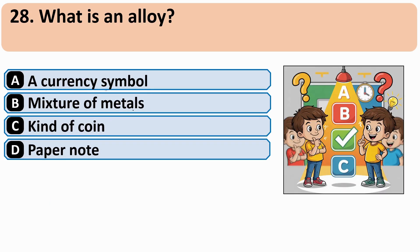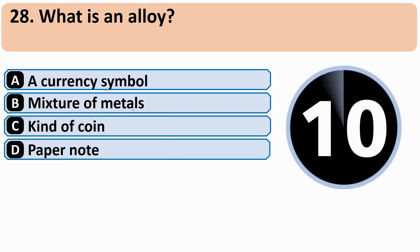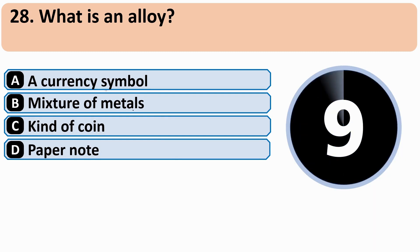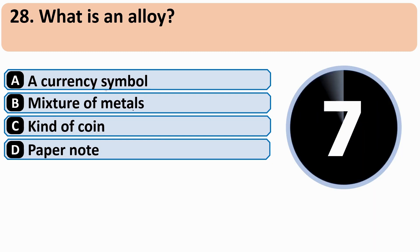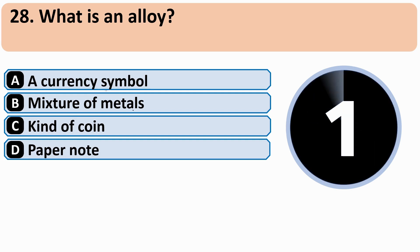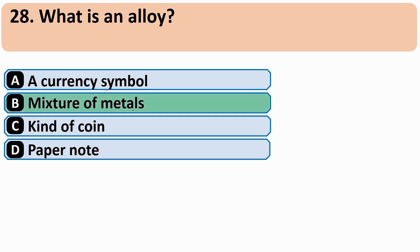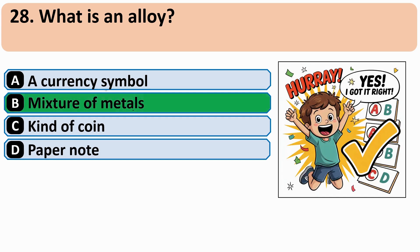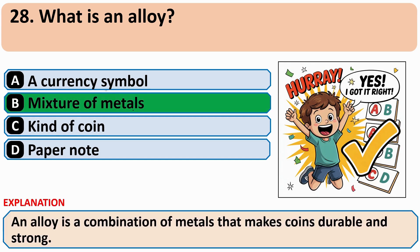What is an alloy? The correct answer is B — Mixture of metals.